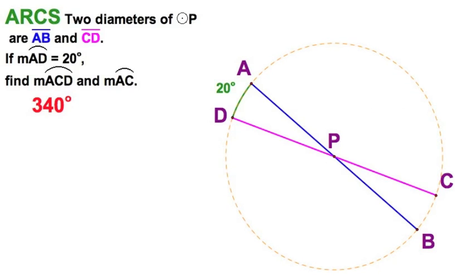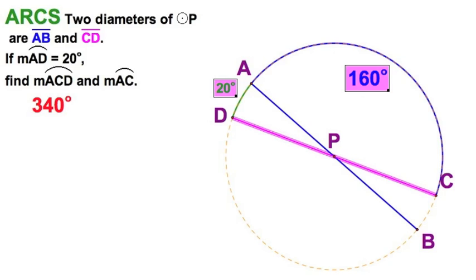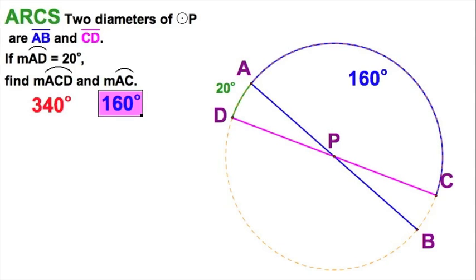Then, the other question, the minor arc AC, well that would be the 160 and this 20, because that's described by this semicircle of 180. So it all makes sense there. And we are finished.